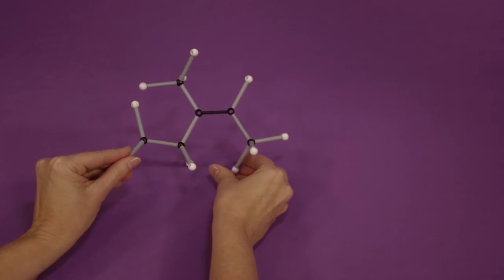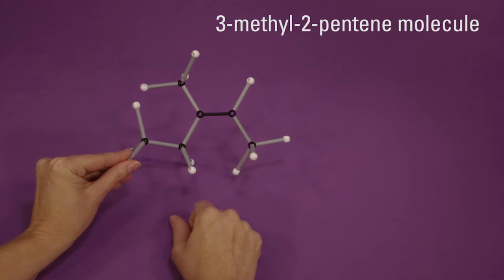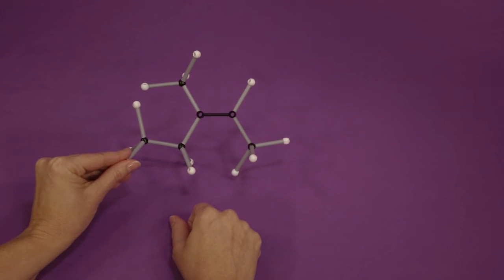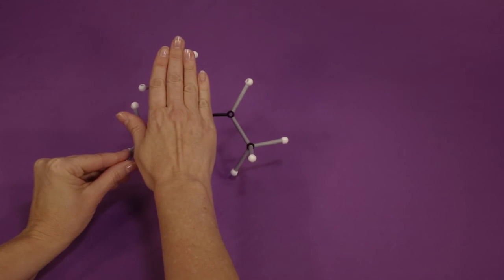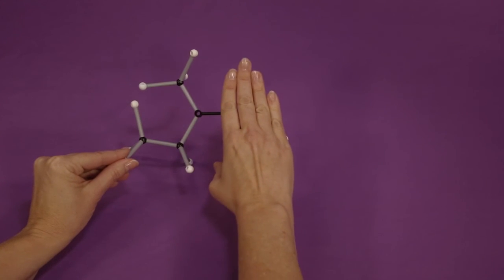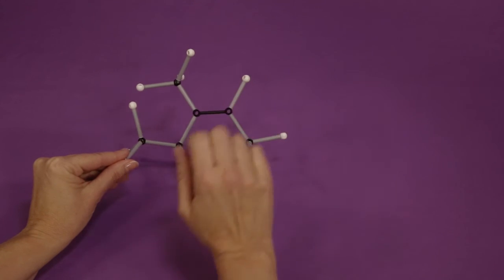The finished product is a 3-methyl-2-pentene molecule. Notice that if you were to cut the double bond in half, there would be a methyl and hydrogen group on one side, and a methyl and ethyl group on the other side.